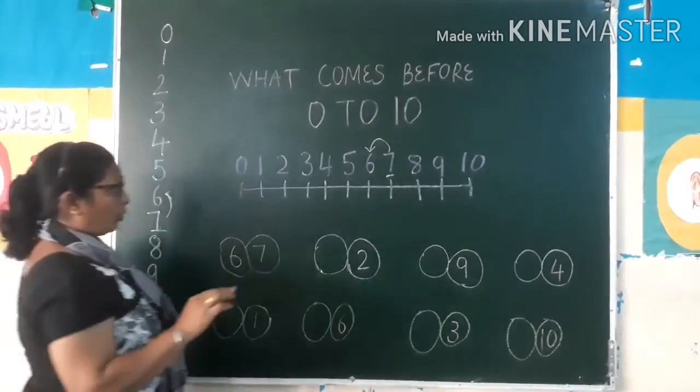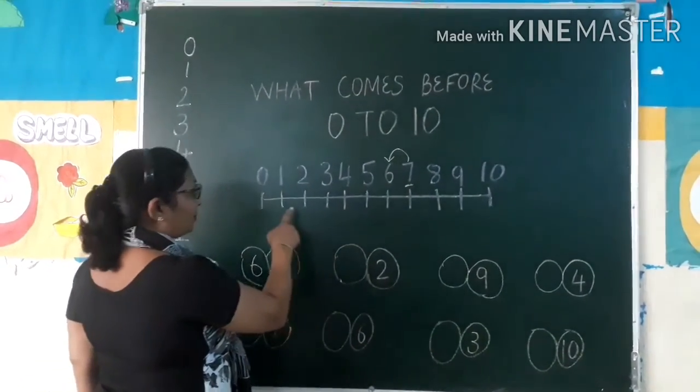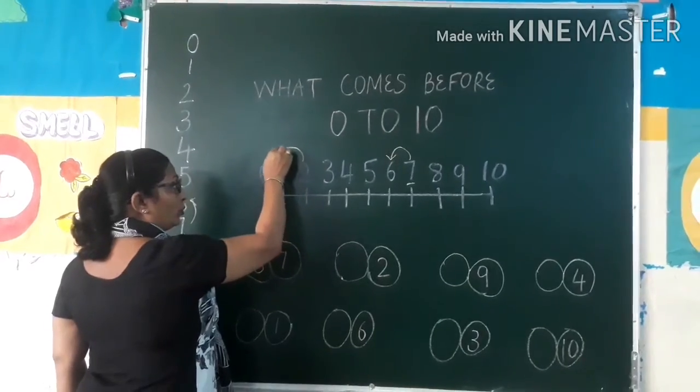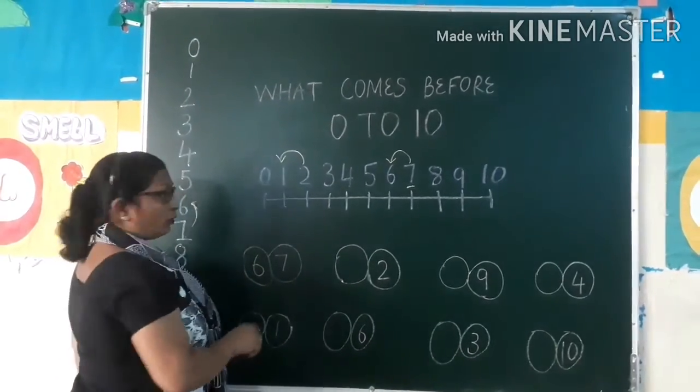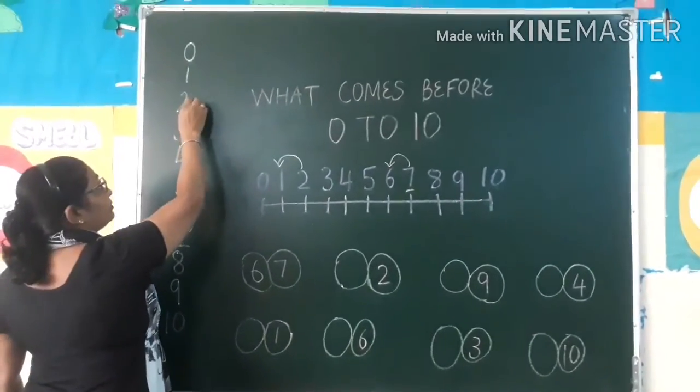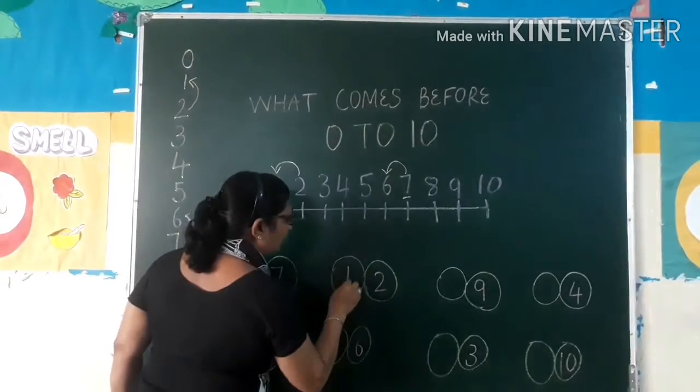Okay? Now, this is number two. Where is number two on number line? Here. And what comes before two? One. Okay? See here also, this is number two. What comes before two? One. So write here, one.